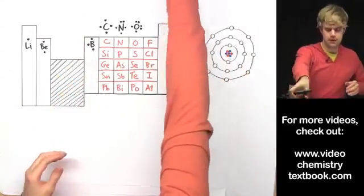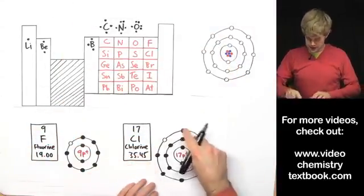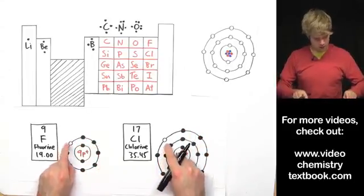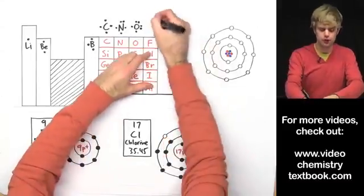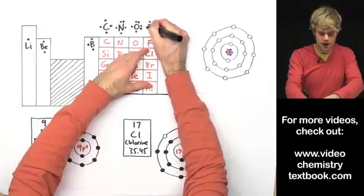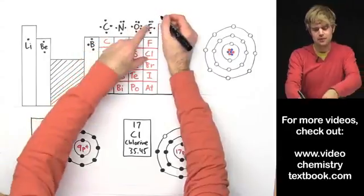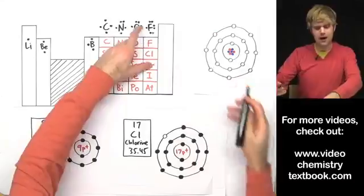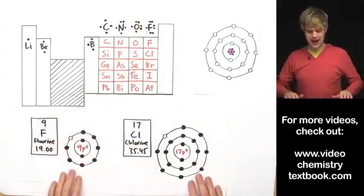Finally, this column has fluorine and chlorine at the top, and both have seven valence electrons — meaning the valence shell is almost full with just one empty spot. For fluorine's electron dot diagram: dot on the top, bottom, left, and right, then we double up on the top, double up on the right, and double up on the bottom. That leaves just one unpaired dot on the left.